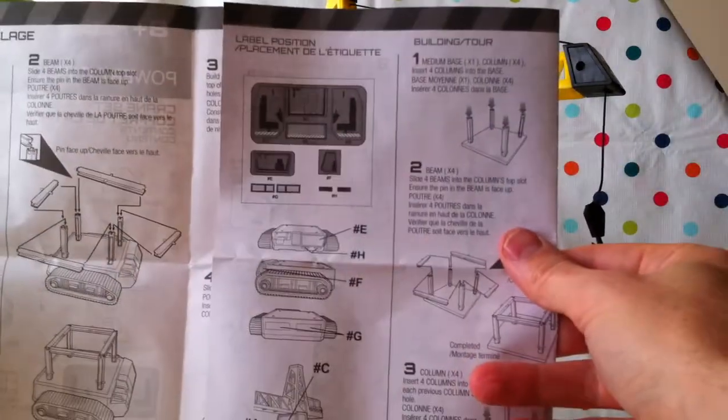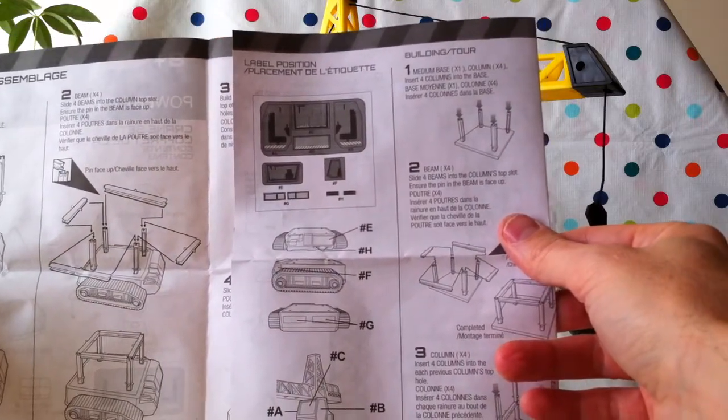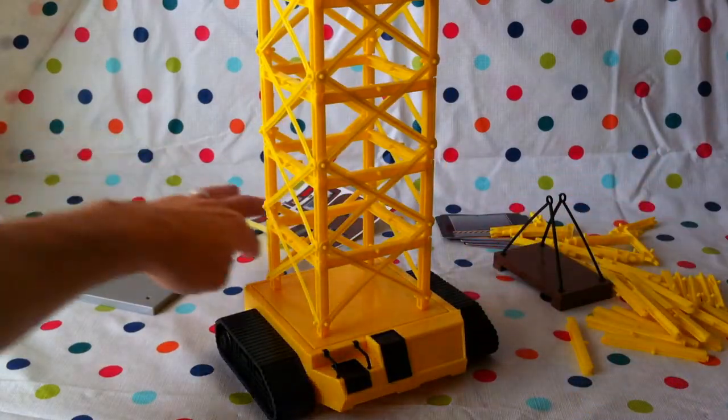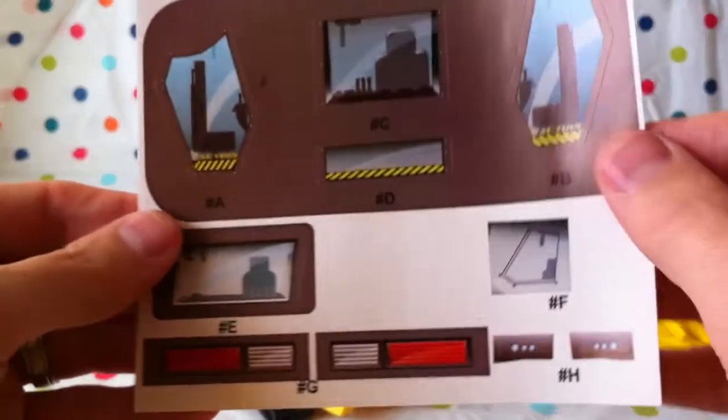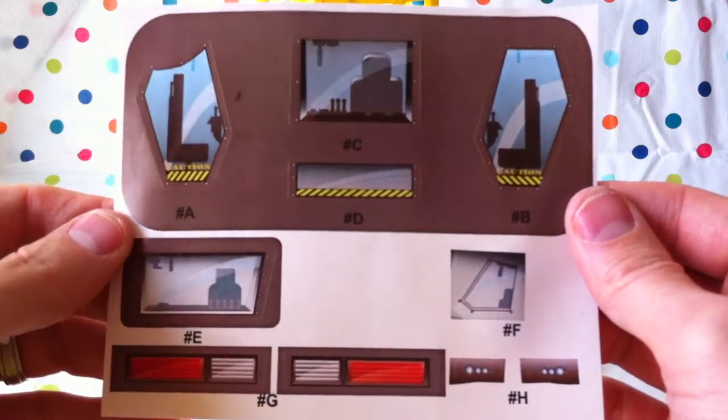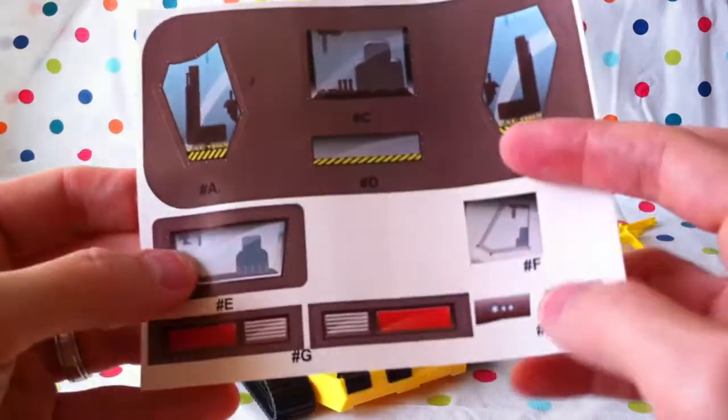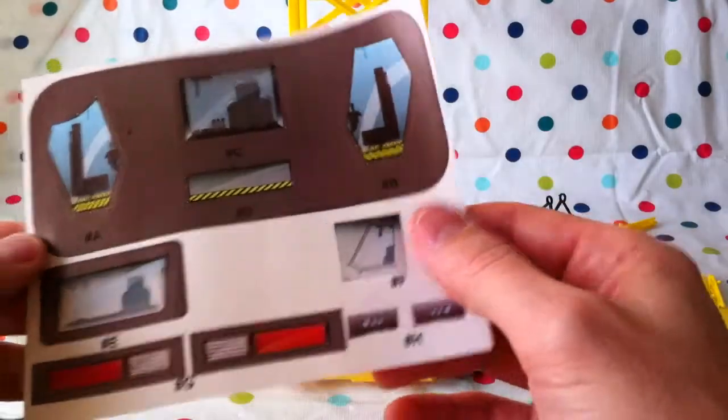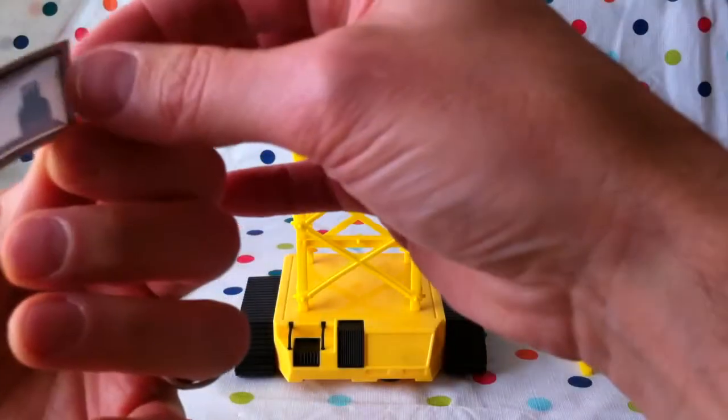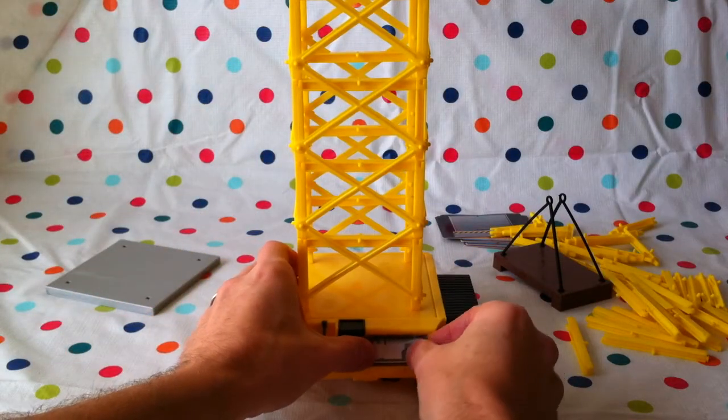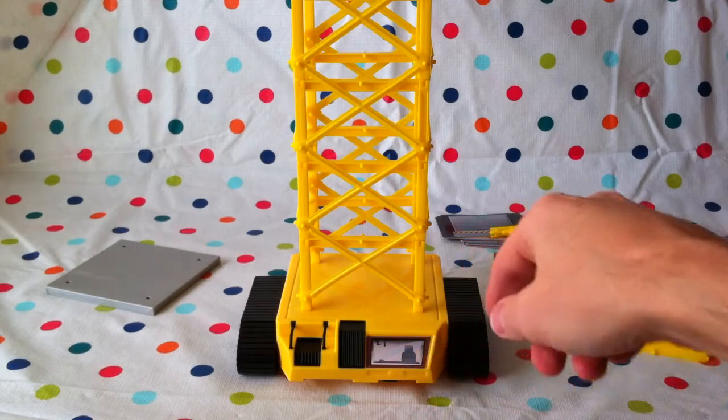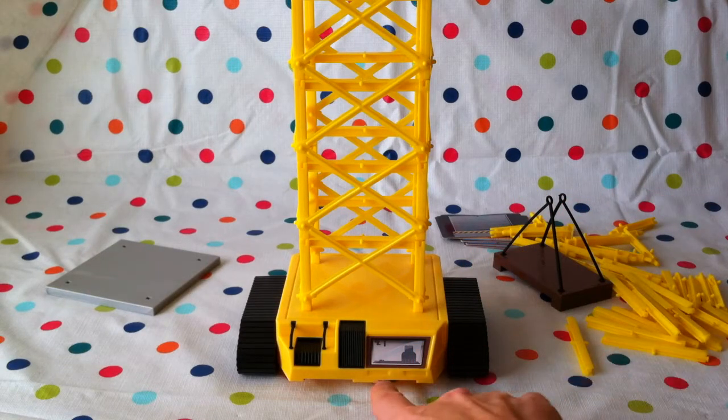Now we can put the labels on. It shows you where the label positions are. First of all, put some labels on the bottom. The labels are given a letter: A, B, C, D, E, F, G, and H. So it shows you which part goes on. In the front here goes E, which is this one. You can see that's the driver, that's where the driver will sit.